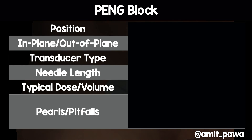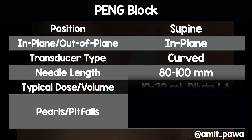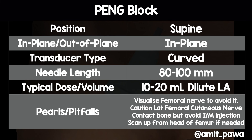In summary: the patient is in the supine position, we needle in-plane using a curved transducer and a needle length of 80 to 100 millimetres, with 10 to 20 mls of dilute local anaesthetic. Pearls and pitfalls: visualise the femoral nerve to make sure you avoid it; be cautious of the lateral femoral cutaneous nerve; contact the bone but avoid an intramuscular injection, as this can cause a motor block as the anaesthetic tracks up towards the femoral nerve. If you struggle to track from the anterior superior iliac spine to the anterior inferior iliac spine, scan up from the femoral head. We hope you found this video useful.